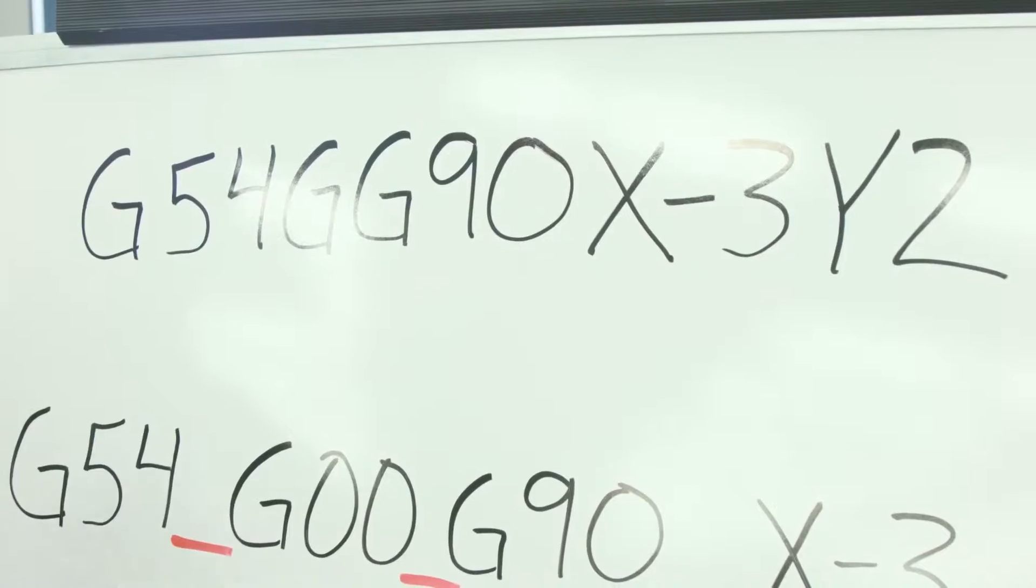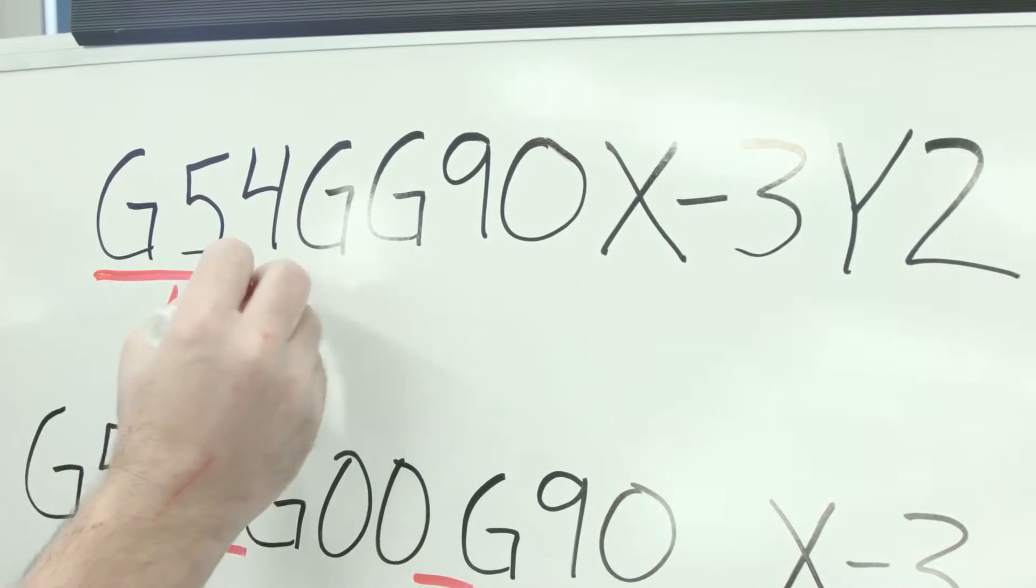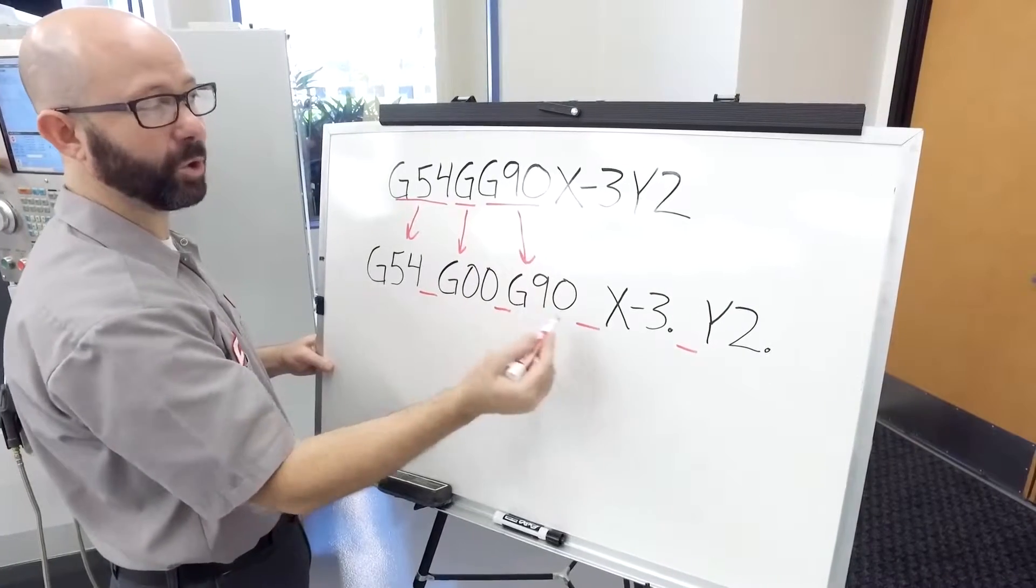When I entered G54, it put G54 and added the space for us. G0, G90 - the control adds the spaces.